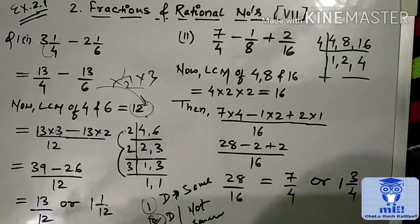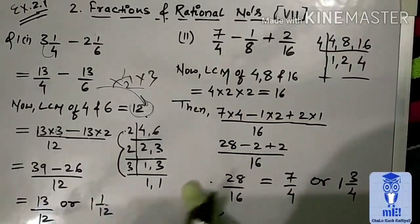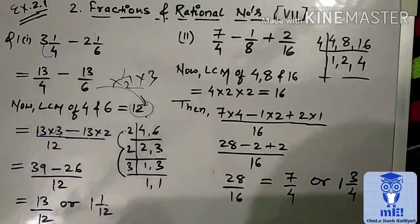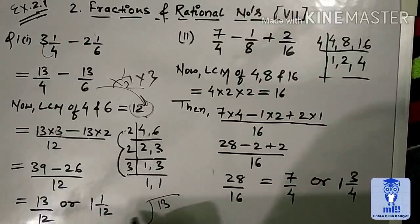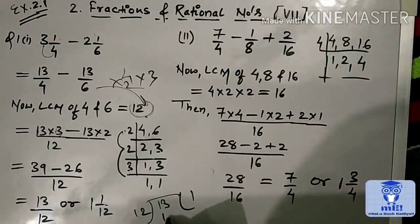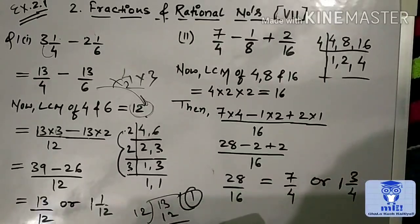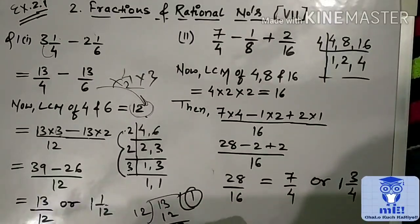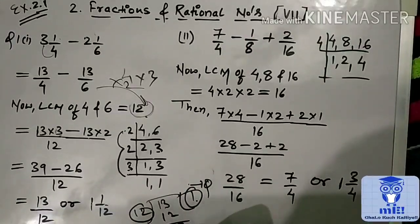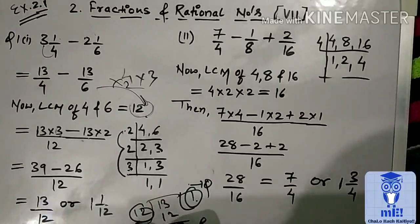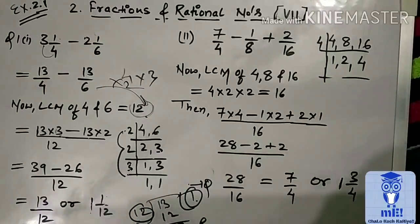Now, 13 by 12. This we convert into mixed fraction. Because our question is also given in mixed fraction. We divide 13 by 12. So, 12 by 12. Here, remainder is 1. So first we write this one quotient. Then, this one remainder. And then, this one divisor. So, quotient, remainder, divisor.